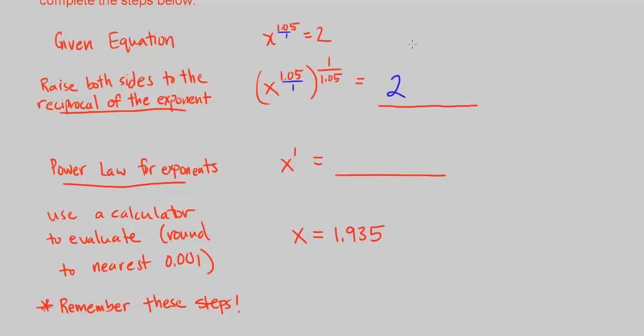So on the right we have 2 to the power of 1 over 1.05 because if you do it to one side, you have to do it to both sides. That's the key thing to remember, you do something to one side, you do it to both sides.